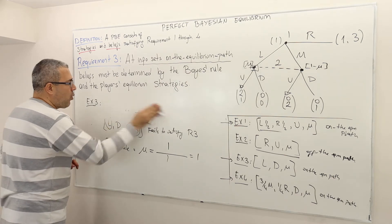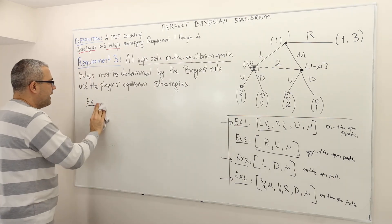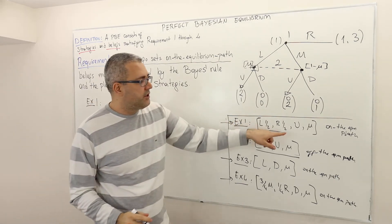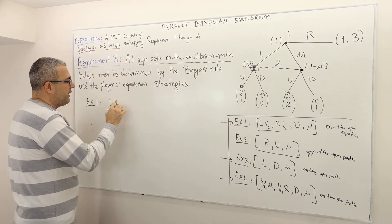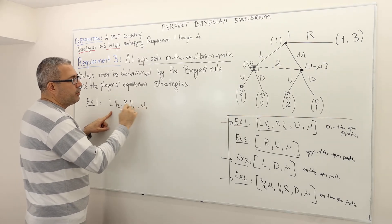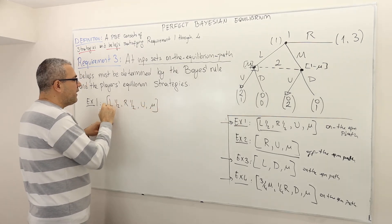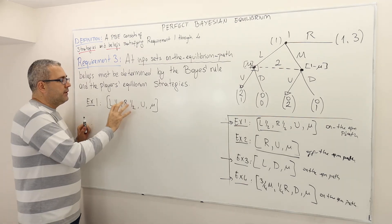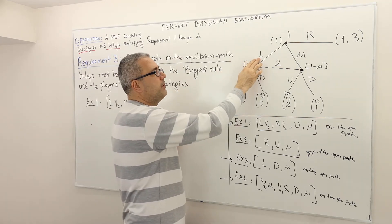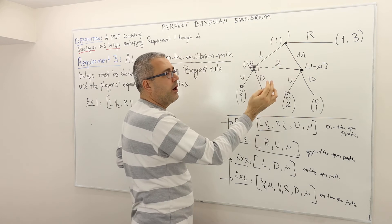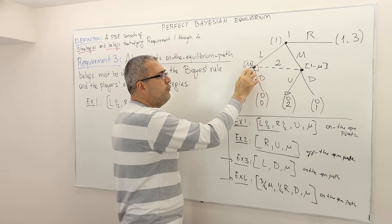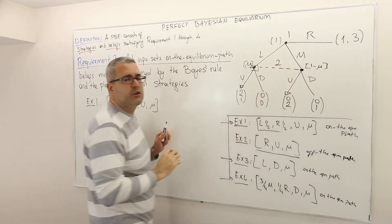Now let's look at example one. According to this strategy profile, player one is going to play left with half probability, right with half probability, player two plays U, and then mu. What mu is going to be — this strategy profile means player two believes his opponent plays left with half probability, R with one-half probability, and believes he's at this decision node with mu probability and the other decision node with one minus mu probability.